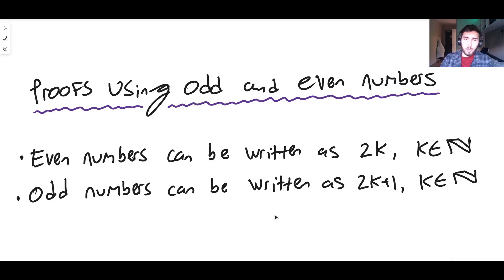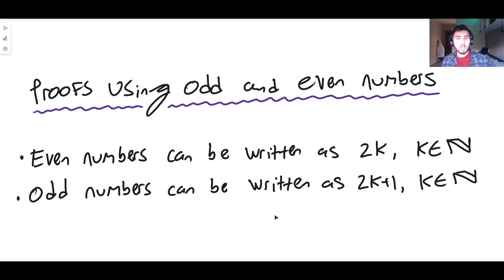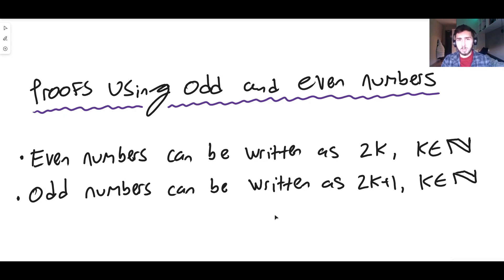As a quick recap: we can write an even number in the form 2k, where k is just some arbitrary natural number — a counting number, like 1, 2, 3, 4, and so on. Two times any natural number is always even. Therefore, if you double any number and then add 1, the result must be odd, because it's not on the two times table. So you can write odd numbers in the form 2k plus 1.